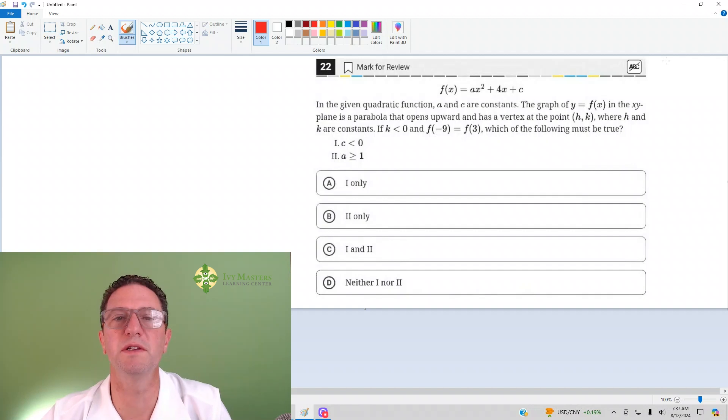This is a 20-second question from Digital SAT Test 2, Module 2B, from the harder set of math questions. Number 22 reads: In a given quadratic function with constants, the graph of y = f(x) in the xy plane is a parabola that opens upward and has a vertex at point (h, k), where h and k are constants. If k is less than zero and f(-9) equals f(3), which of the following must be true?